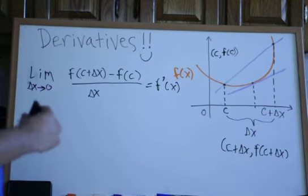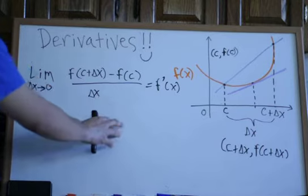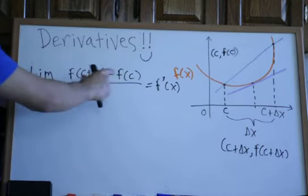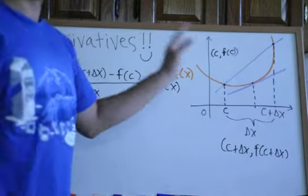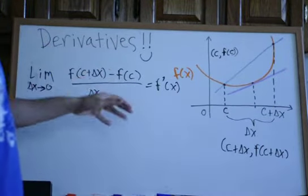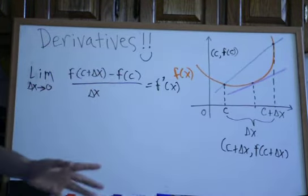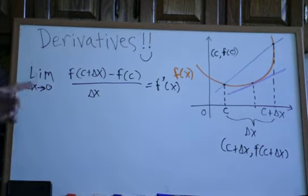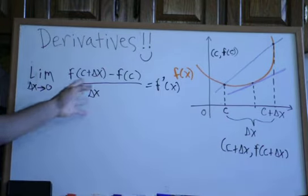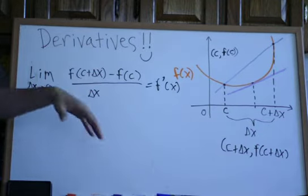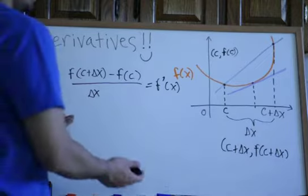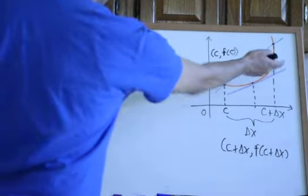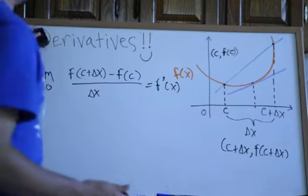Now we have this formula, and we can actually use it. This is the formula for the derivative of a function — just a general formula. We can use this with a specific function to calculate the derivative, and then use that derivative to calculate the slope of the tangent line, such as this purple one here.